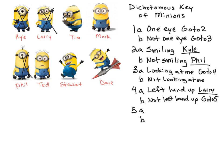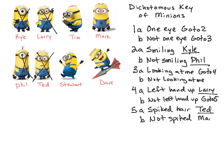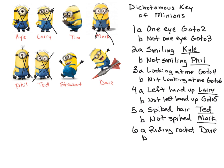I notice that Ted has spiked hair, but Mark has kind of flat hair. So I'm going to write down 'spiked hair' and 'not spiked hair.' For spiked hair, this is Ted — so I'll underline Ted and cross him off. Then the one that's not spiked is Mark — so I'll write down Mark and cross him off. That leaves me with three minions. So I need to go back up and look at the ones that are not looking at me, and I'm going to write 'go to six.' So six A and B — I look at Tim, Stuart, and Dave. I noticed that Dave's on a rocket, so I'm going to write 'riding a rocket.' And that's Dave — so Dave is keyed out.